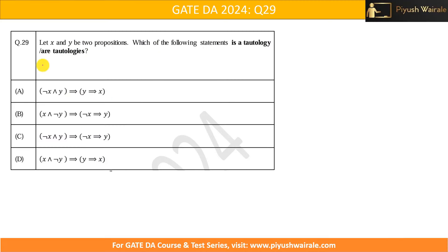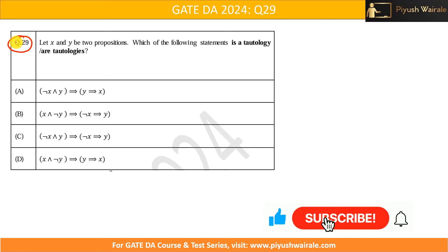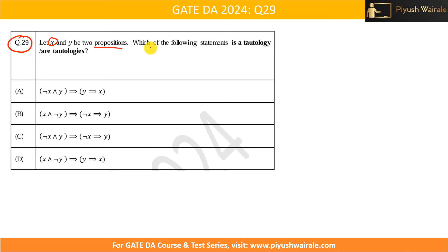Hello everyone. In this video we are going to discuss question number 29 of the GATE DA 2024 exam. The question asks: let x and y be two propositions — which of the following statements is a tautology? Since it says 'are' tautologies, this is an MSQ — multiple options can be correct.